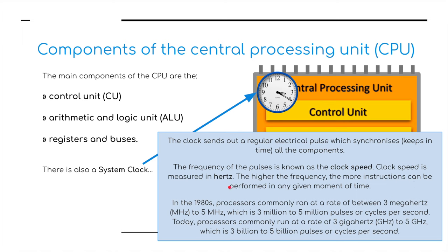The frequency of the pulses is known as the clock speed. Clock speed is measured in hertz. The higher the frequency, the more instructions can be performed in any given moment. In the 1980s, processors commonly ran at a rate of between three to five megahertz — three million to five million pulses or cycles per second. In today's processors, these commonly run at anything between three to five gigahertz, which is three billion to five billion pulses or cycles per second — quite a jump from the 1980s to present day, roughly 40 years on.